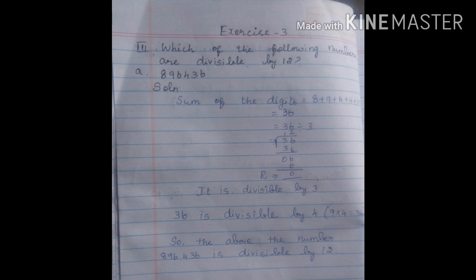Exercise sum, Exercise 3, Page number 65, Roman 3. First sum: Which of the following numbers are divisible by 12? So first sum: 8, 9, 6, 4, 3, 6. First you write solution. Next, sum of the digits, apply rule 3. 8 plus 9 plus 6 plus 4 plus 3 plus 6 equals 36.